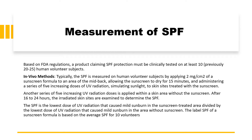While calculating the measurement for the SPF, as per FDA regulations, there are two ways: in vivo methods and in vitro methods. In vitro methods are being preferred these days because they don't require human volunteers — they simulate in vivo conditions without using human volunteers. In in vivo methods, human volunteers are exposed to harmful radiations. A product claiming SPF protection must be clinically tested on at least 10 human volunteer subjects. In vivo SPF is measured by applying 2 mg per cm² of a sunscreen formula to an area of the mid back and allowing the sunscreen to dry for 15 minutes.